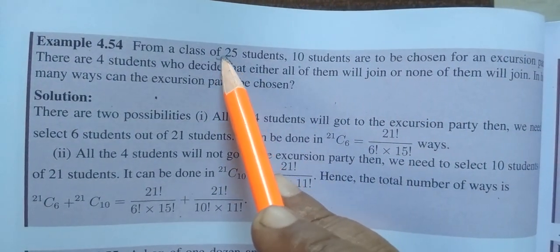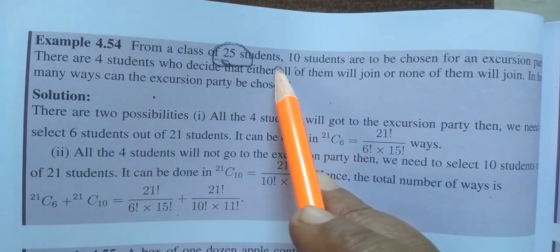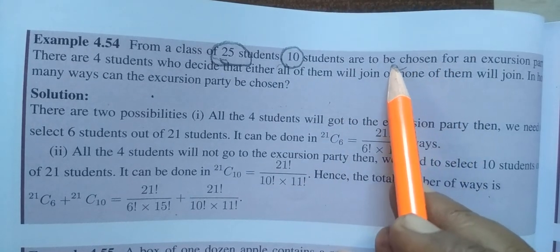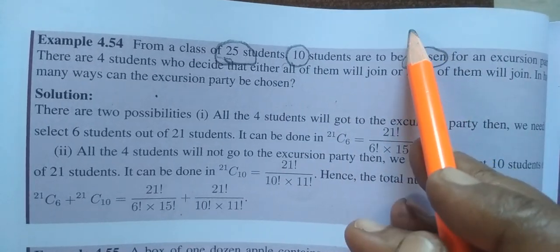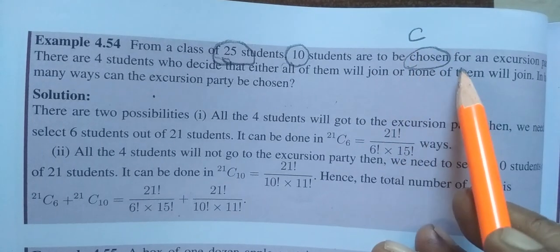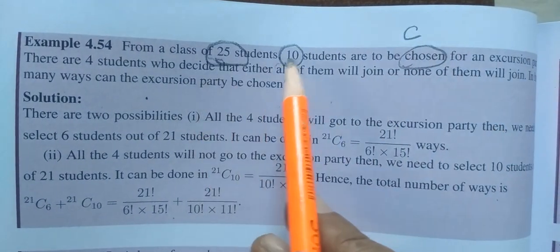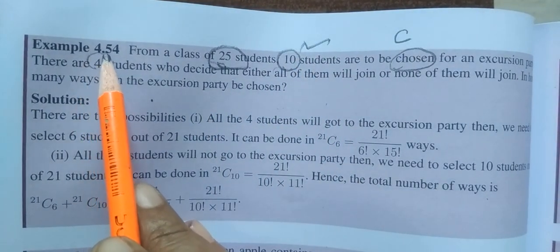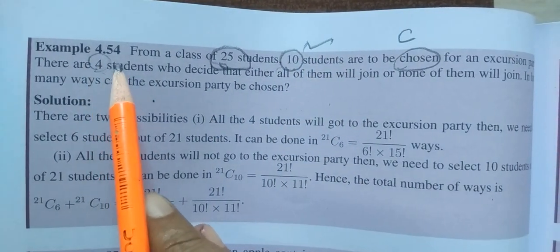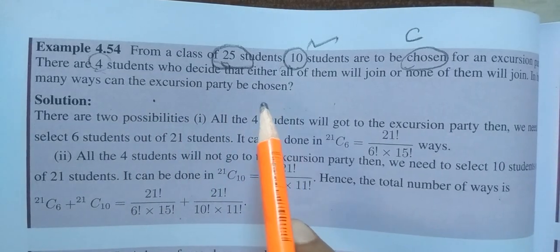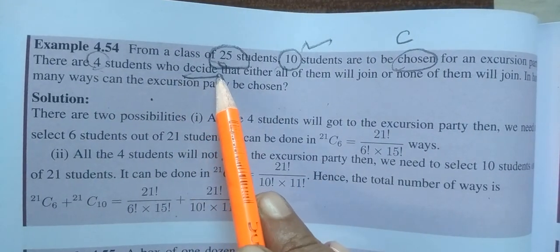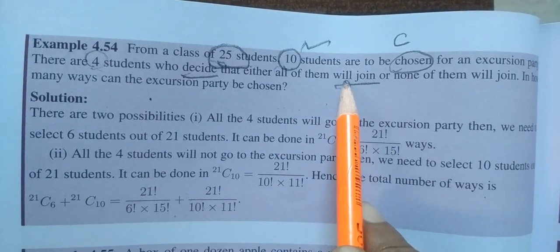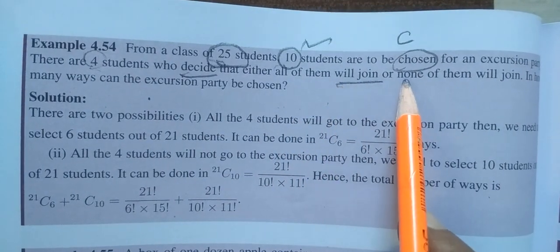For a class of 25 students, 10 students choose to be ready for an excursion. Out of the 10 students, 4 students decide to join or not decide to join, who decide that either all of them will join. 4 people will join or 4 people will not join.